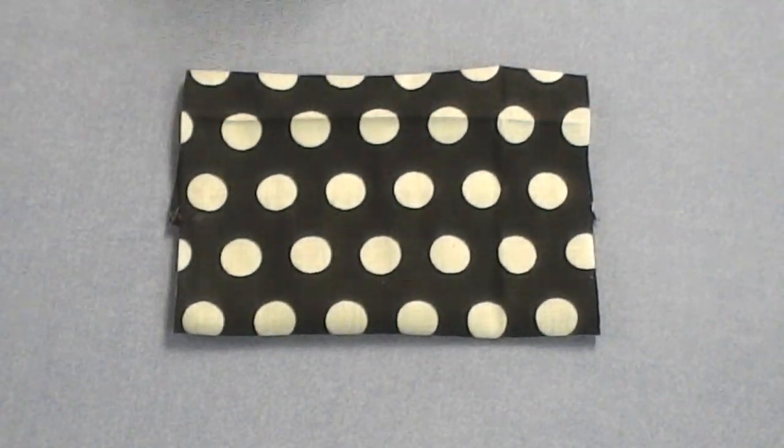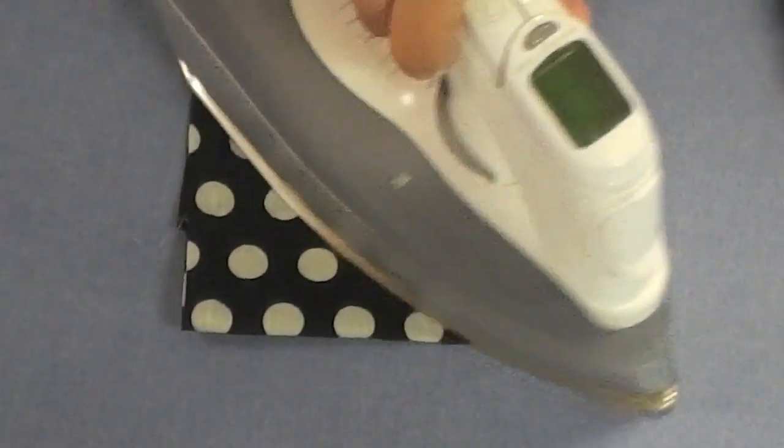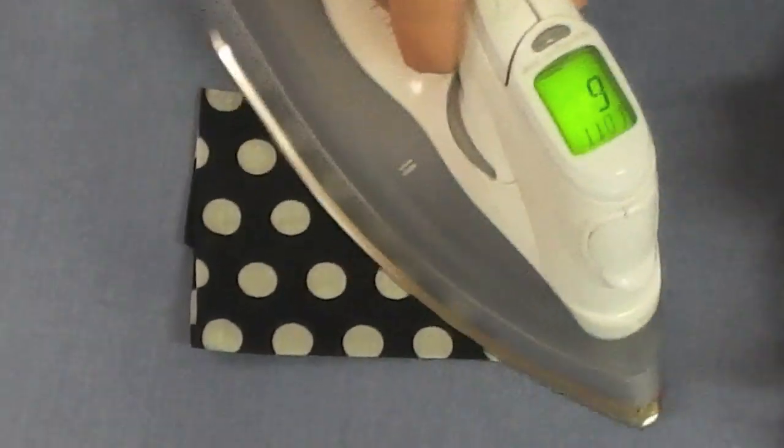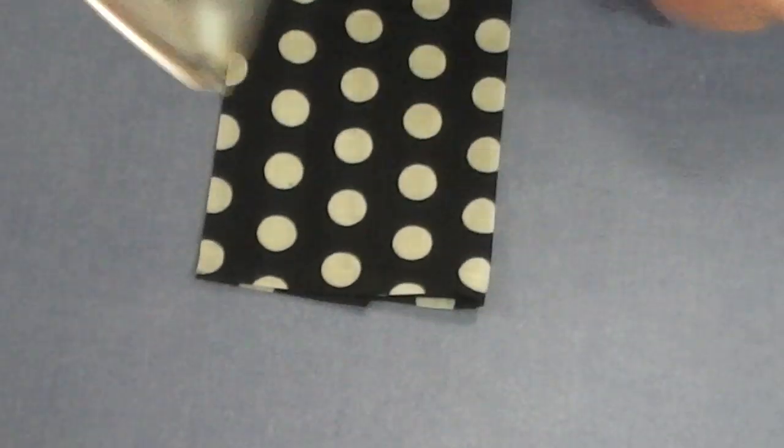This is where the iron comes in handy. My fabric had a lot of wrinkles where the fabric was folded, so I just ironed it out to make it nice and straight and crisp.